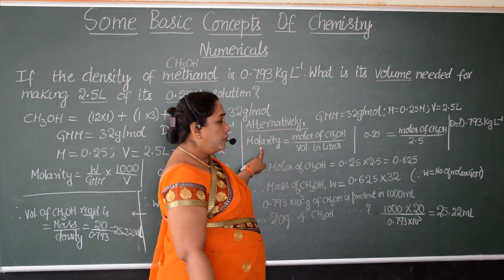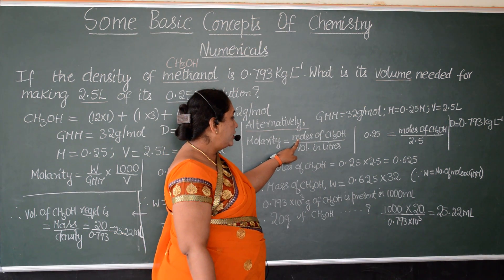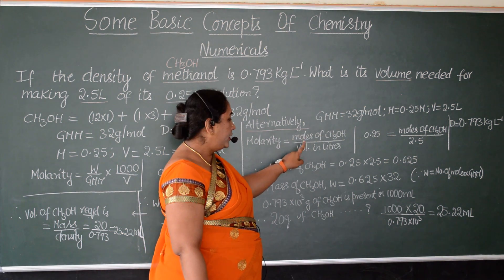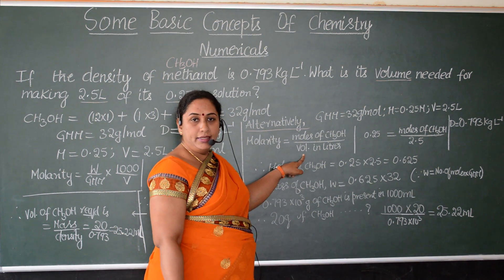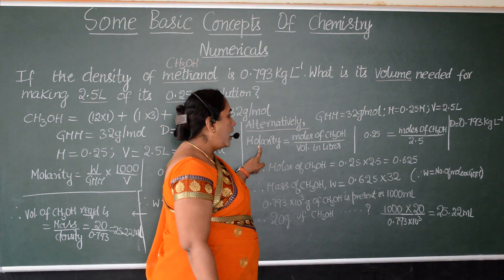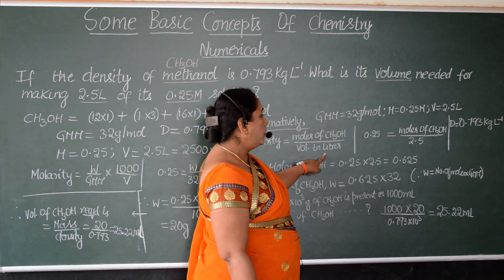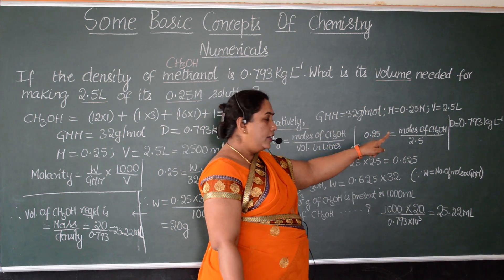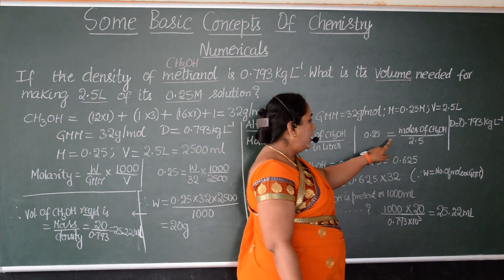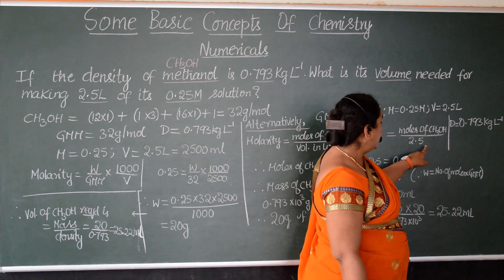Now, what is molarity? Molarity is nothing but moles of methanol, that is number of moles of methanol by volume in liter is molarity. So, now let us substitute this value. Molarity we know as 0.25. Volume in liter we know as 2.5 liter. So, 0.25 equals moles of methanol by volume that is 2.5.